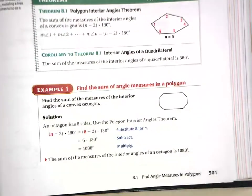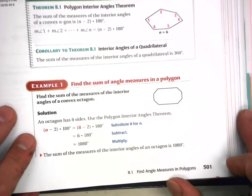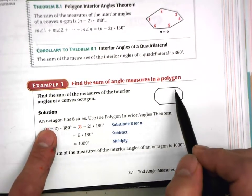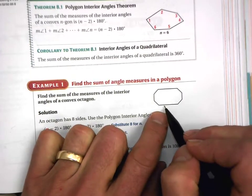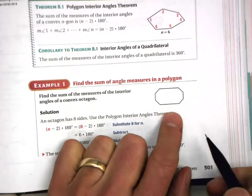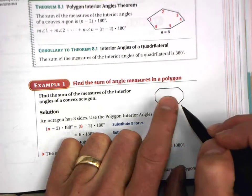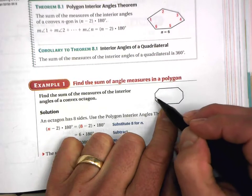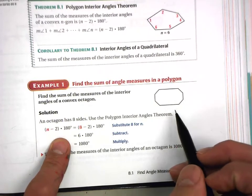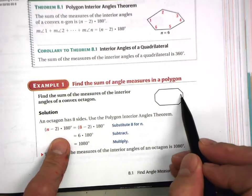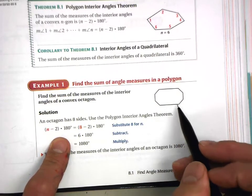Let me do one of these textbook examples to get you ready. They tell us this polygon is an octagon. Start in one particular place and count the sides carefully so you don't count the same side more than once: one, two, three, four, five, six, seven, eight. So eight sides is an octagon, and they want us to find the sum of the interior angles of this polygon.